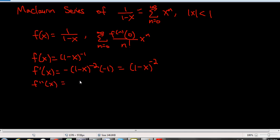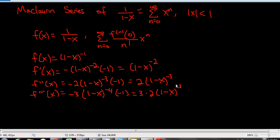So now I'm taking the derivative of this thing here, and so it would be negative 2 times 1 minus x to the negative 3 times negative 1. So the negative 1 here cancels with the negative out here, and I'm left with 2 times 1 minus x to the negative 3. One more. So f triple prime of x, this would be equal to negative 3 times 1 minus x to the negative 4. Of course, negative 1 from the chain rule, and I get 3 times 2 times 1 minus x to the negative 4.